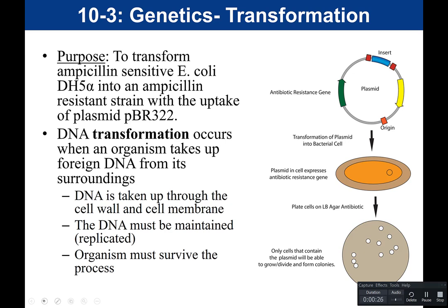Ampicillin is a drug in the family of penicillins. An antibiotic like ampicillin would target E. coli and cause it to die. The goal of this experiment is to transform ampicillin-sensitive E. coli into a resistant strain using a plasmid, which we'll discuss in a minute.